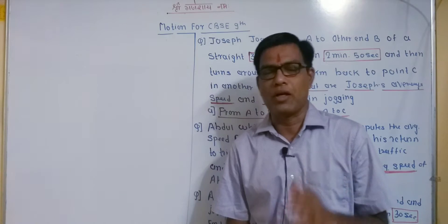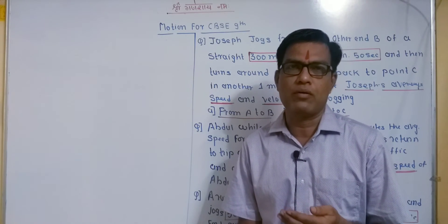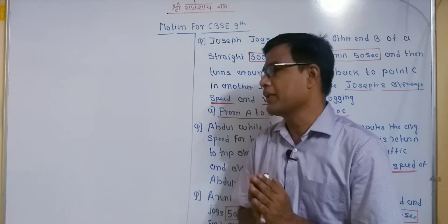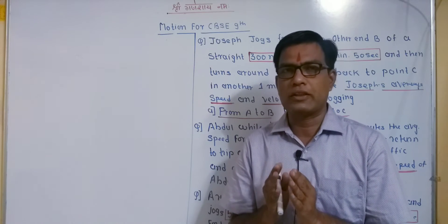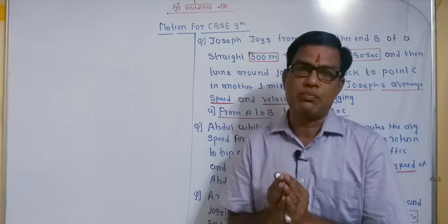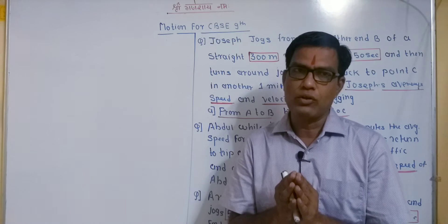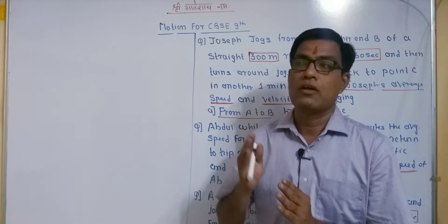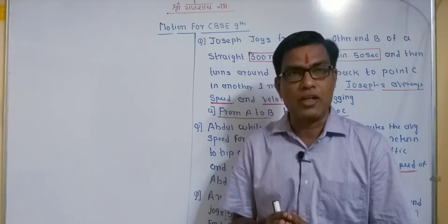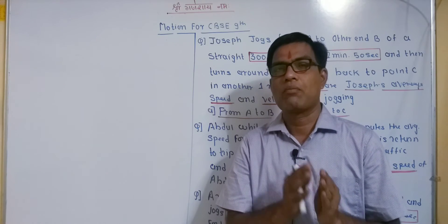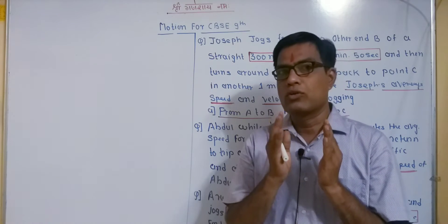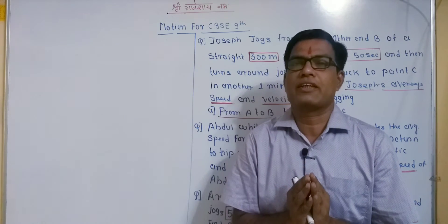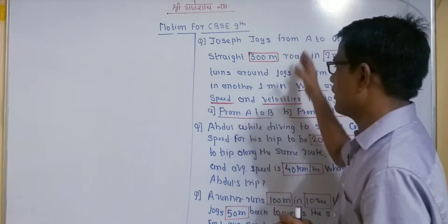We already discussed average velocity, average speed, and uniform motion. Average speed equals total distance divided by time, and average velocity equals total displacement divided by total time interval. The units of velocity and speed are both the same. Whenever the rate of change of velocity is uniform, we can take average velocity equal to initial velocity plus final velocity divided by 2. To understand this concept carefully, we will solve two examples.